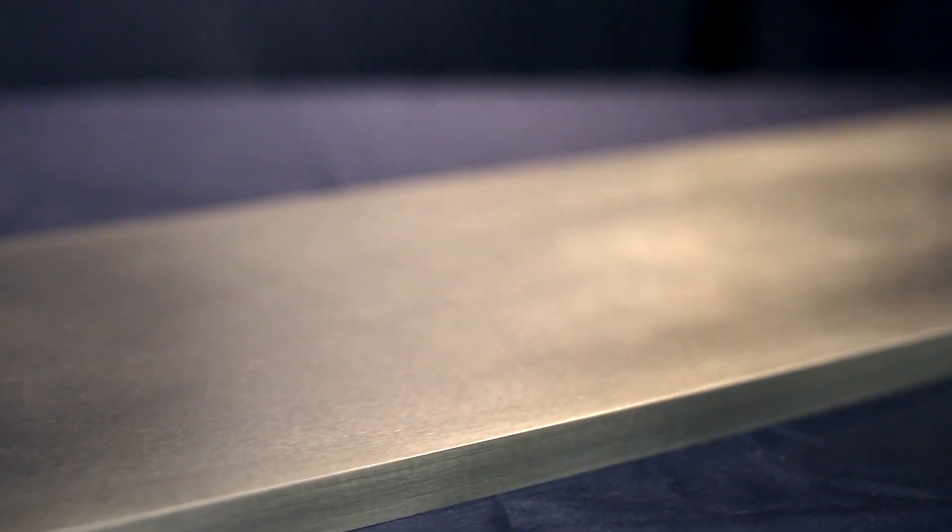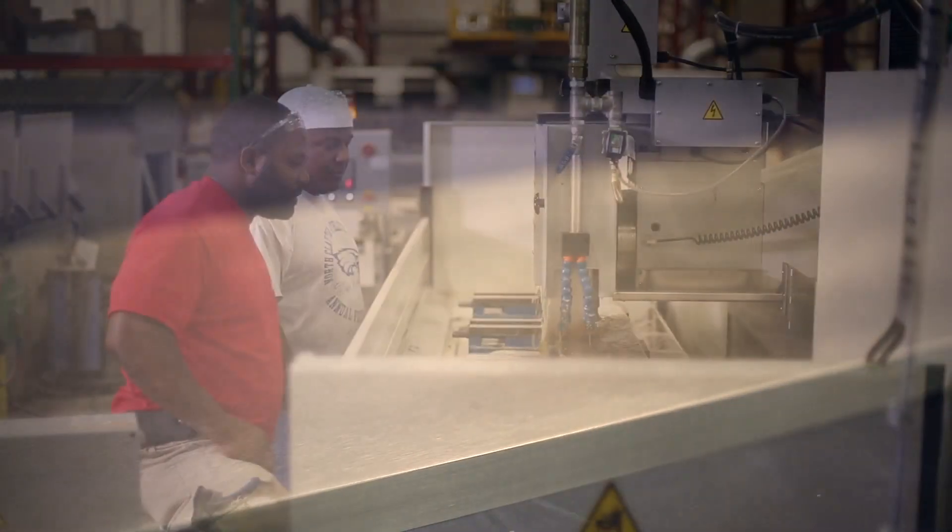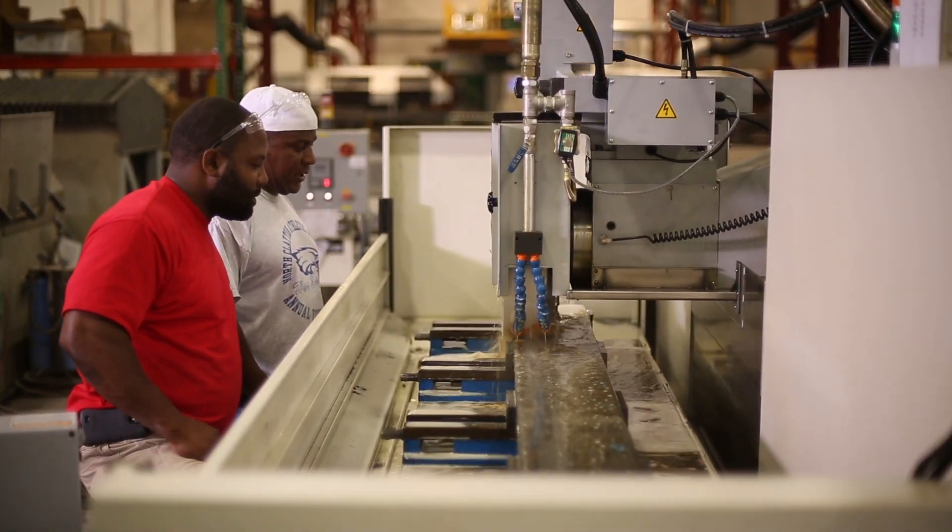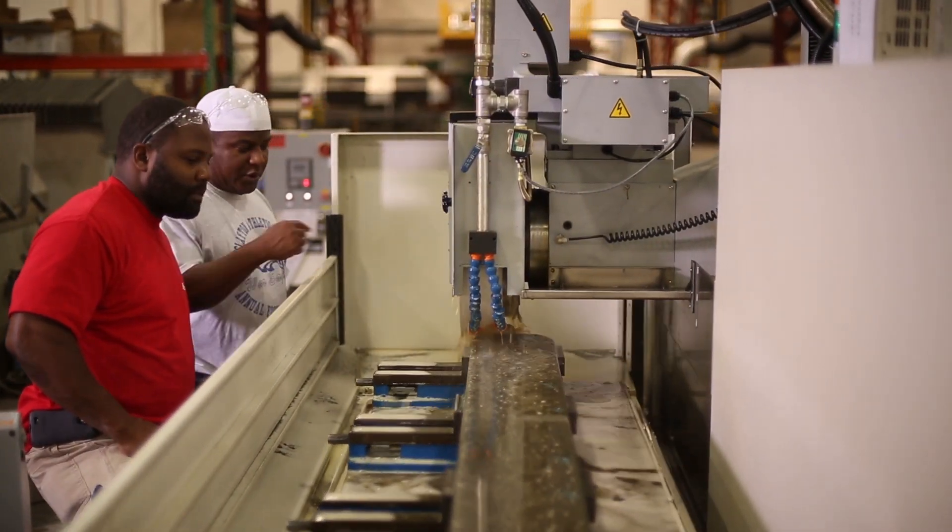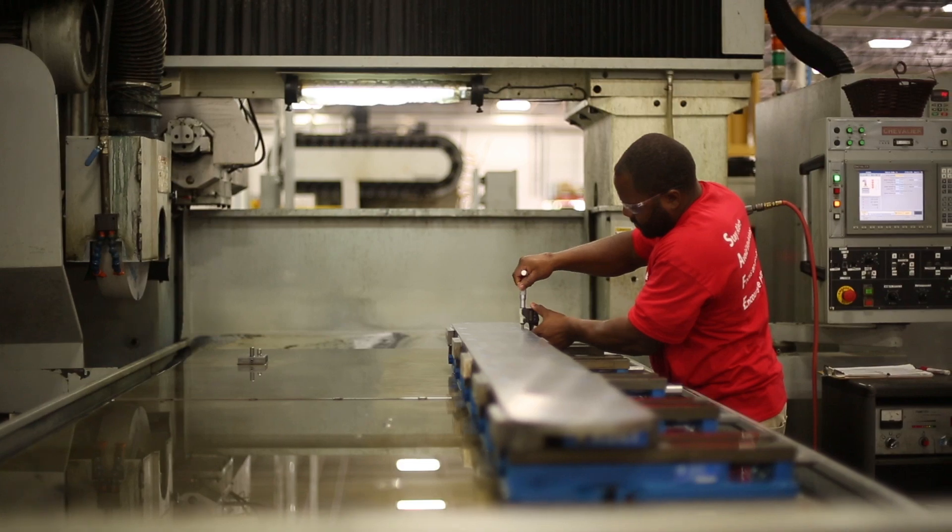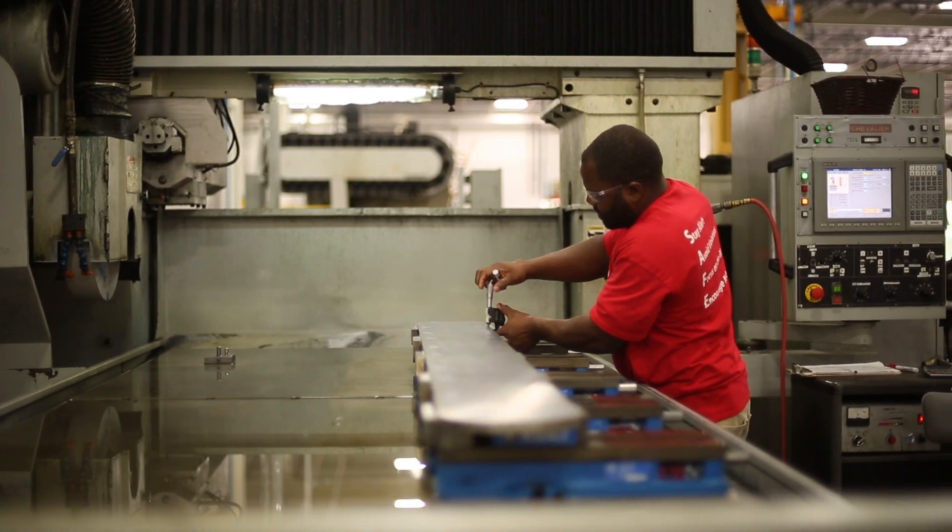For the flat panel display and solar panel industries, Elmet offers a full line of molybdenum sputtering targets. Our proprietary CNC grinding process and materials meet the most demanding tolerances for target flatness and finish.